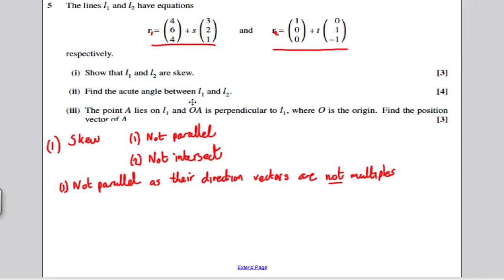How can you show they are not parallel? Not parallel is pretty obvious actually. The direction of this is 3, 2, 1. The direction of this is 0, 1, minus 1. They are not multiples of each other. So they are not parallel as their direction vectors are not multiples of each other.